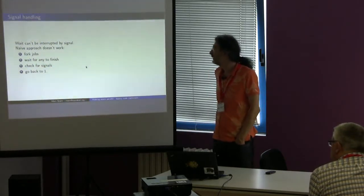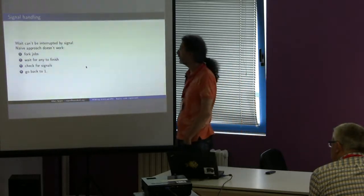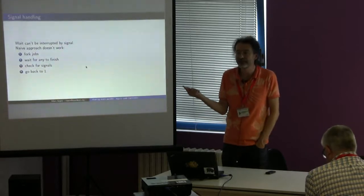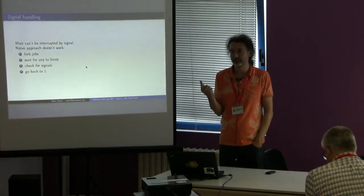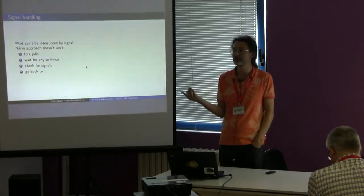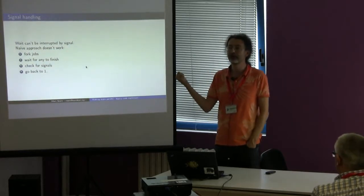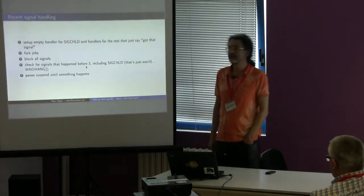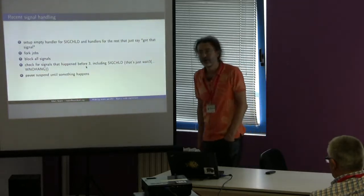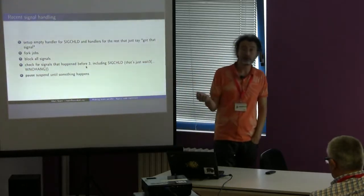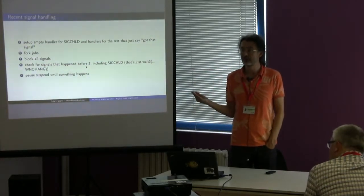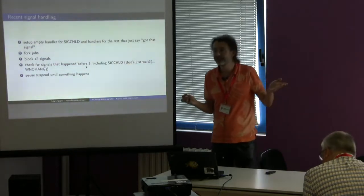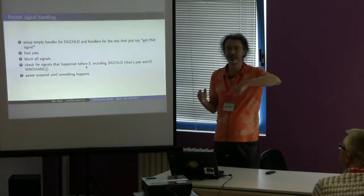SIGCHLD non-blocking became an issue. You can't fork jobs and use wait() and expect to get signals at the same time, because wait() won't be interrupted by signals. If you have make building lots of stuff and you want to interrupt it and you do things that way, you may have to wait for a long time. The idea is to do something funky with signals: instead of waiting for jobs, you pause until you get a signal. To get notified of jobs finishing, you just put an empty handler for SIGCHLD — whenever one of your children dies, you get a signal which you ignore, but at least you get out of the loop.